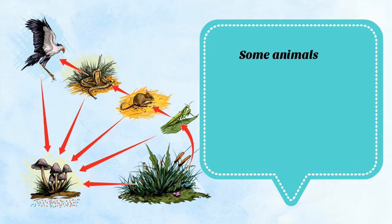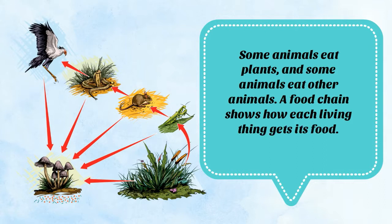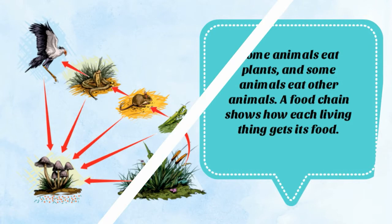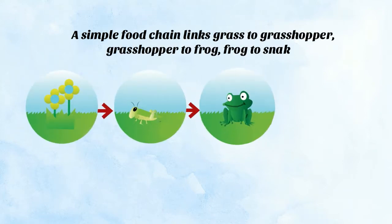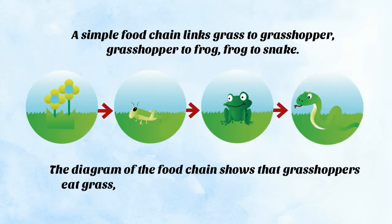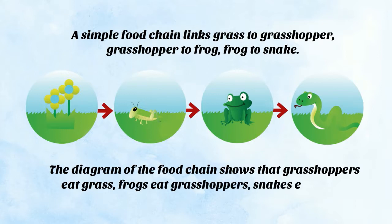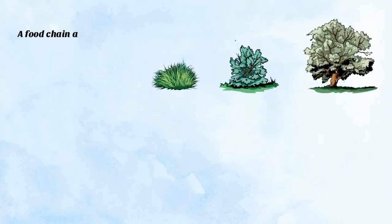Some animals eat plants and some animals eat other animals. A food chain shows how each living thing gets its food. A simple food chain links grass to grasshopper, grasshopper to frog, frog to snake. The diagram of the food chain shows that grasshoppers eat grass, frogs eat grasshoppers, and snakes eat frogs.